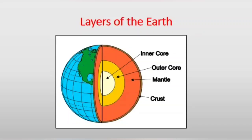So when we see the Earth, it is just blue in color. You might have seen it in the globe as well. Because most of the surface of the Earth is covered with water and the remaining one is covered with soil. But how the Earth actually looks inside, that we are going to see with the help of a diagram — the layers of the Earth.